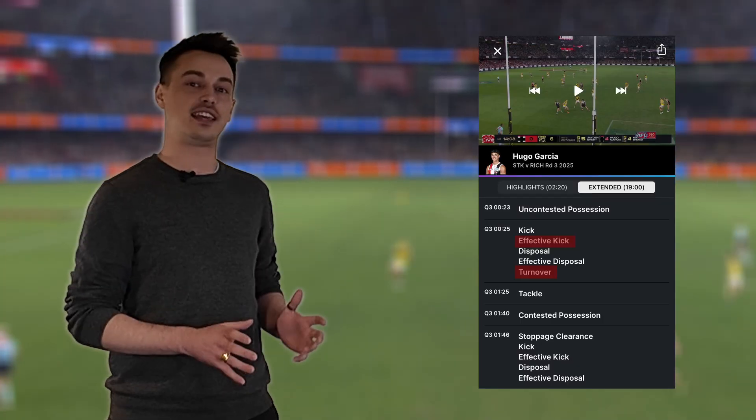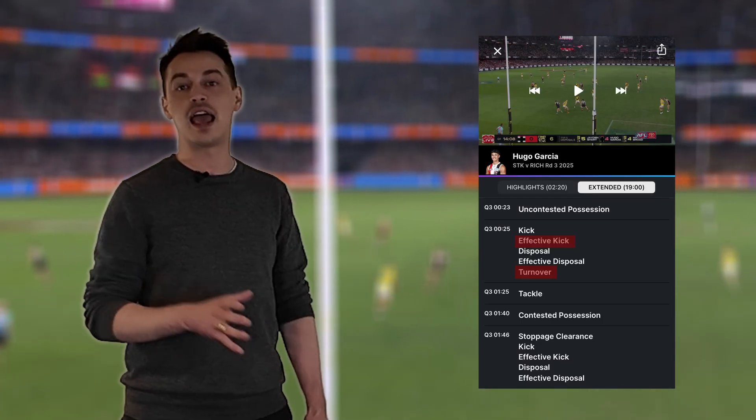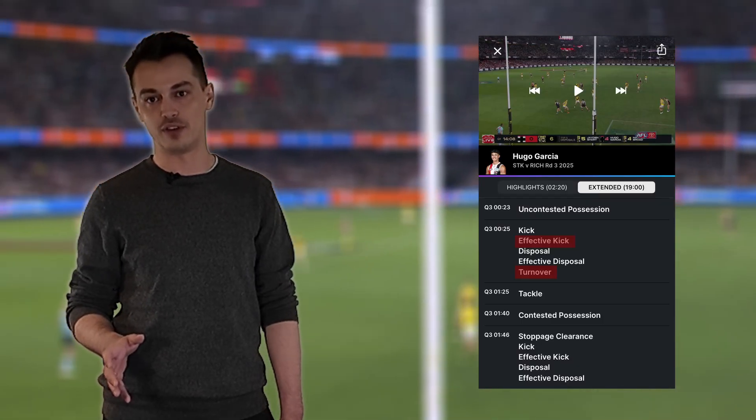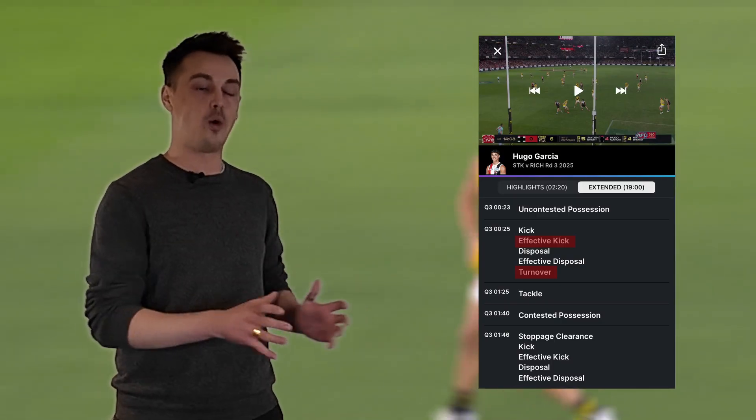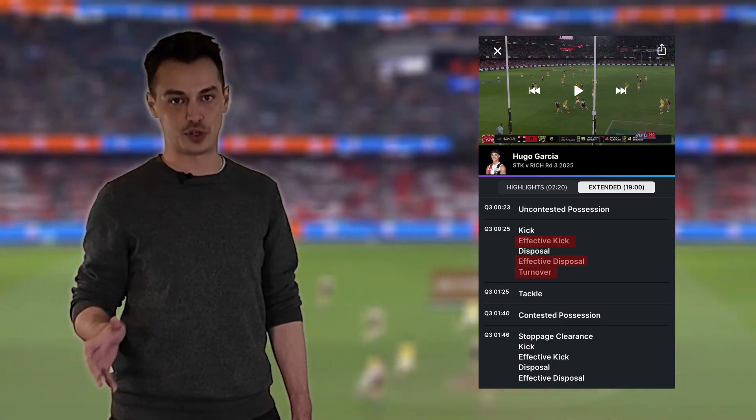Because the onus on effective long kicks isn't always to retain the football and therefore can include turnovers. This flows on and means all effective disposals can include turnovers too. So, now we understand why disposal efficiency isn't a great measurement of a player's accuracy in modern football. What should we be using?